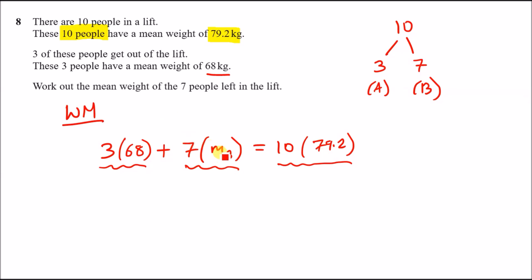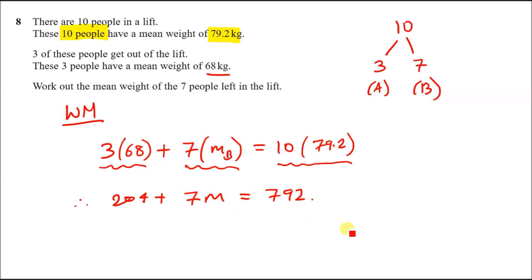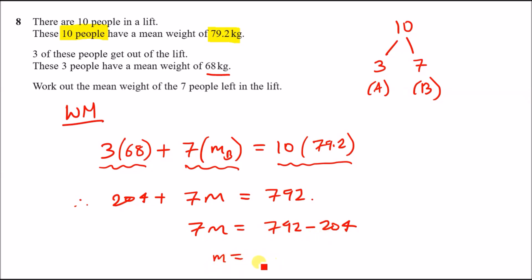We just need to find m_B and make it the subject. First: 3 times 68 equals 204, so we get 204 + 7m = 792. Subtracting 204 gives 7m = 588, then dividing by 7 gives a mean weight of 84 kg for the seven people remaining in the lift.